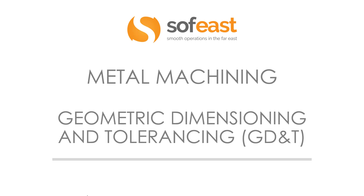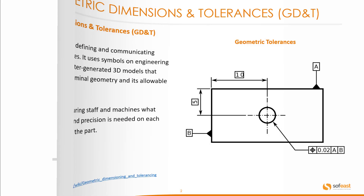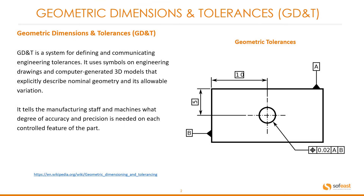Welcome to the next video in the metal machining series. Here we're going to be looking at geometric dimensioning and tolerancing, commonly known as GD&T. Geometric dimensions and tolerances is a system for defining and communicating engineering tolerances. It uses symbols on engineering drawings and computer generated 3D models that explicitly describe nominal geometry and its allowable variation. It tells the manufacturing staff and machines what degree of accuracy and precision is needed on each controlled feature of the part.